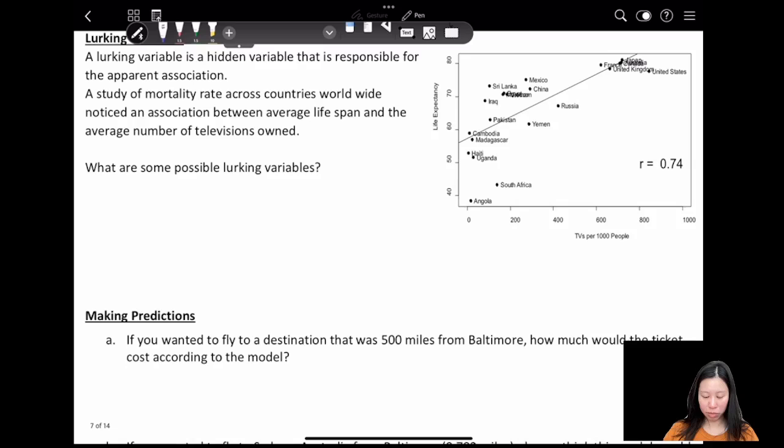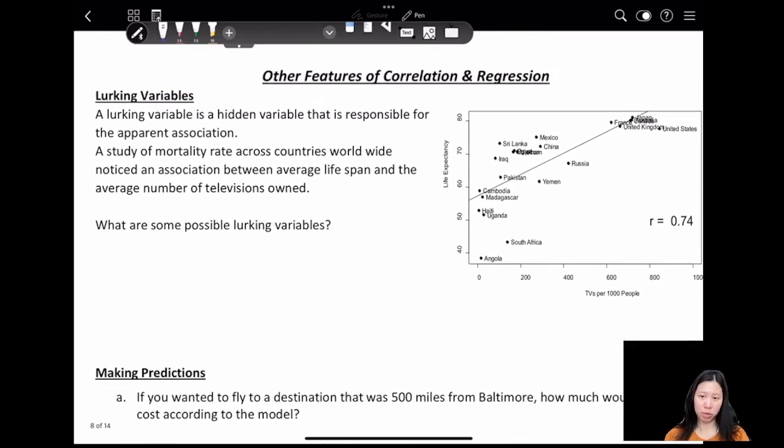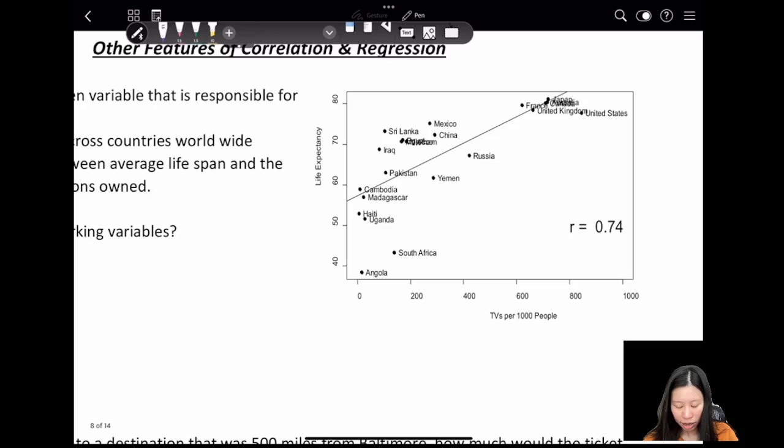Let's take a look at lurking variables. What's a lurking variable? The lurking variable is the hidden variable that's responsible for the apparent association. Look at this scatter plot: a study of mortality rates across countries worldwide shows the association between average lifespan and the average number of televisions owned.